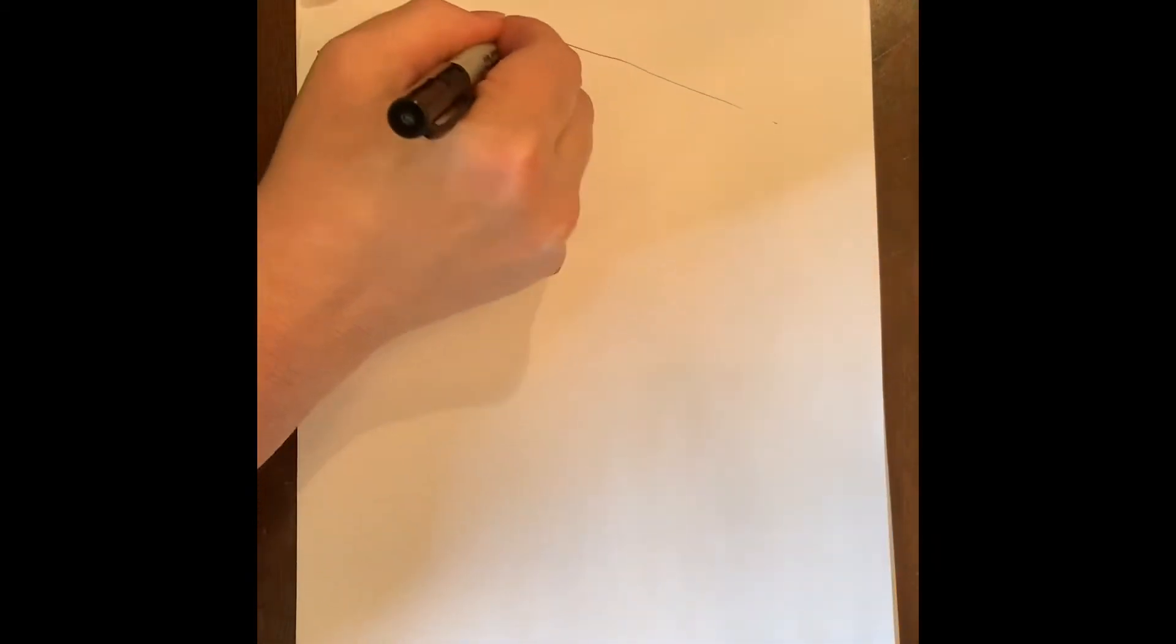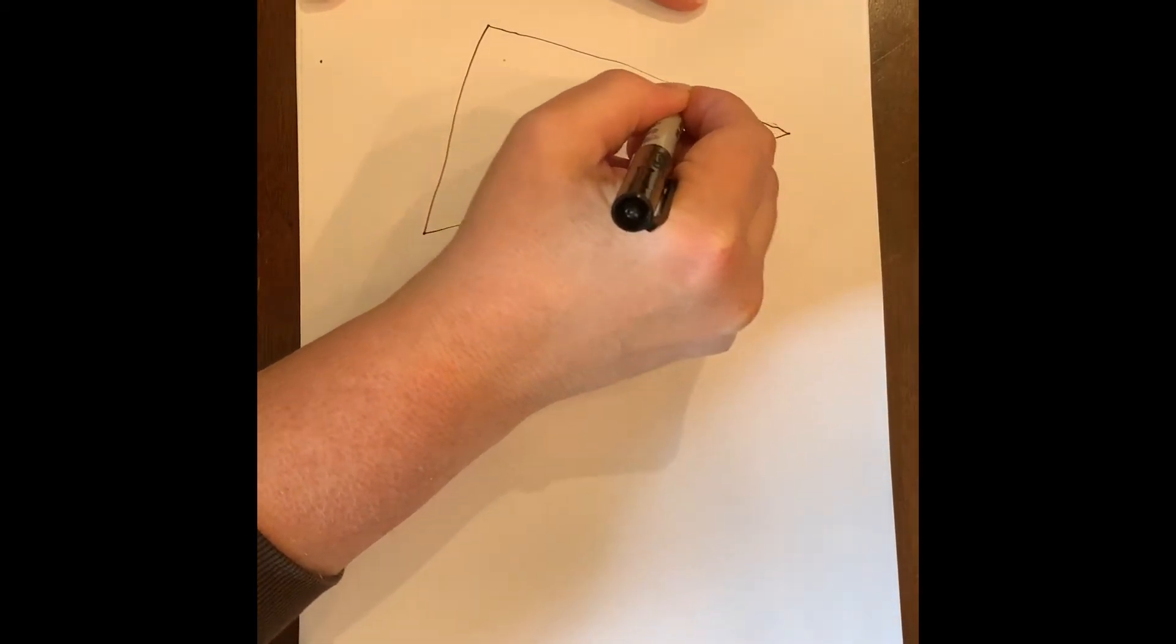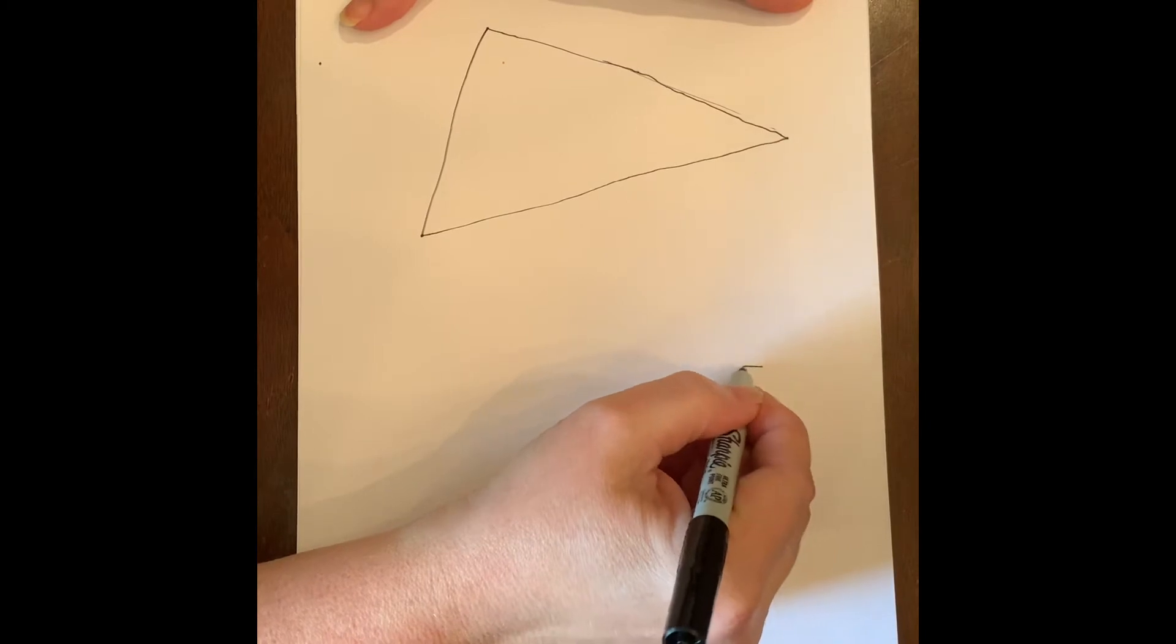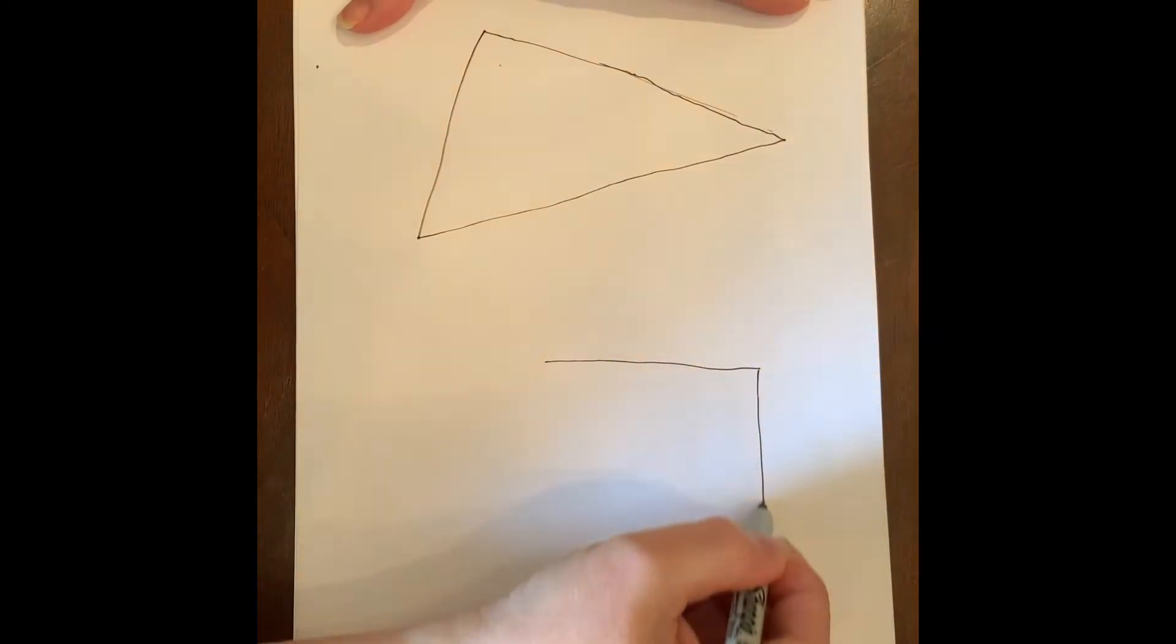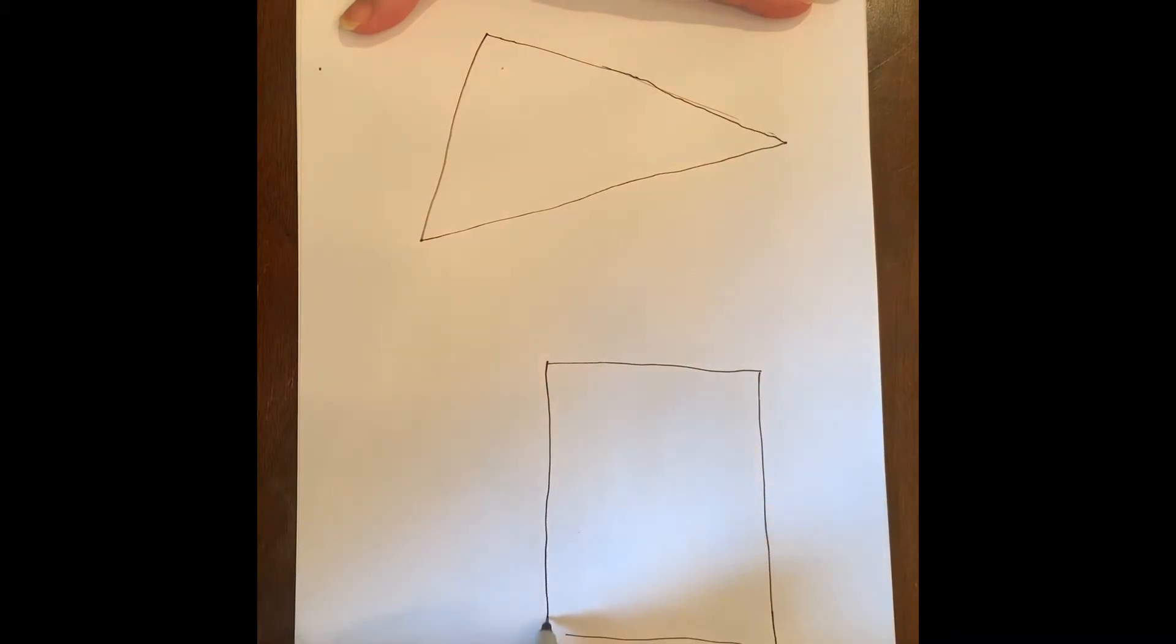Now we're going to make two shapes on the page and it doesn't matter what the shapes are and it doesn't matter where you put the shapes. So I'm going to put a triangle here and you notice I'm not filling the page and I didn't get worried that I made a little mistake because I can fix it later and I am going to put a rectangle here. All right, so that's our first step.